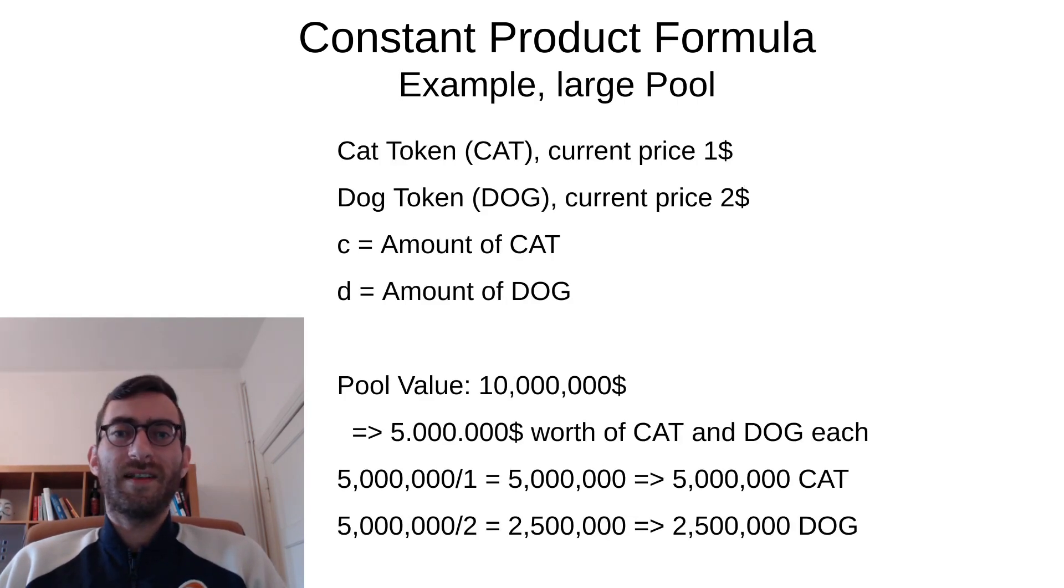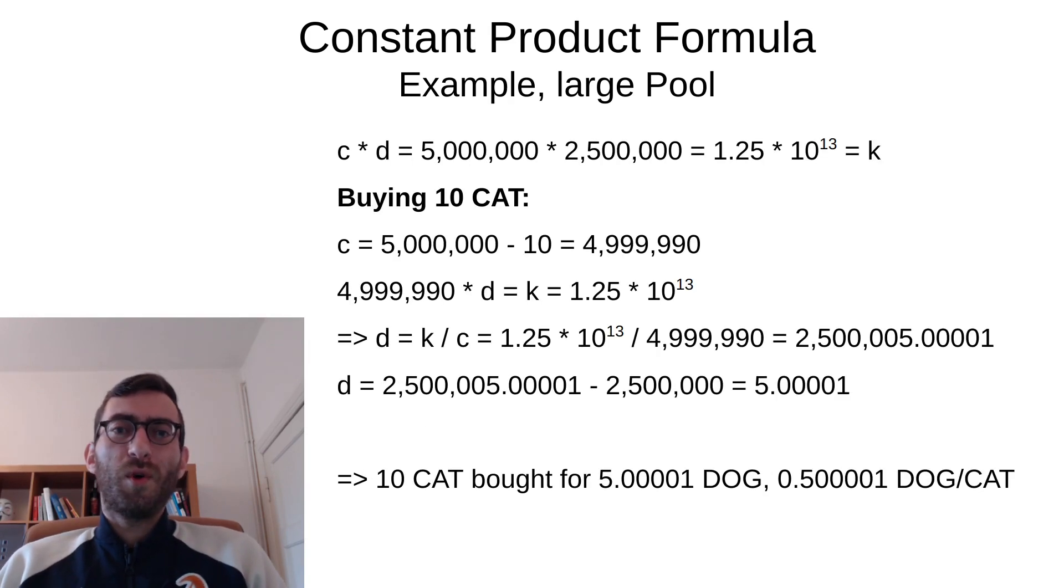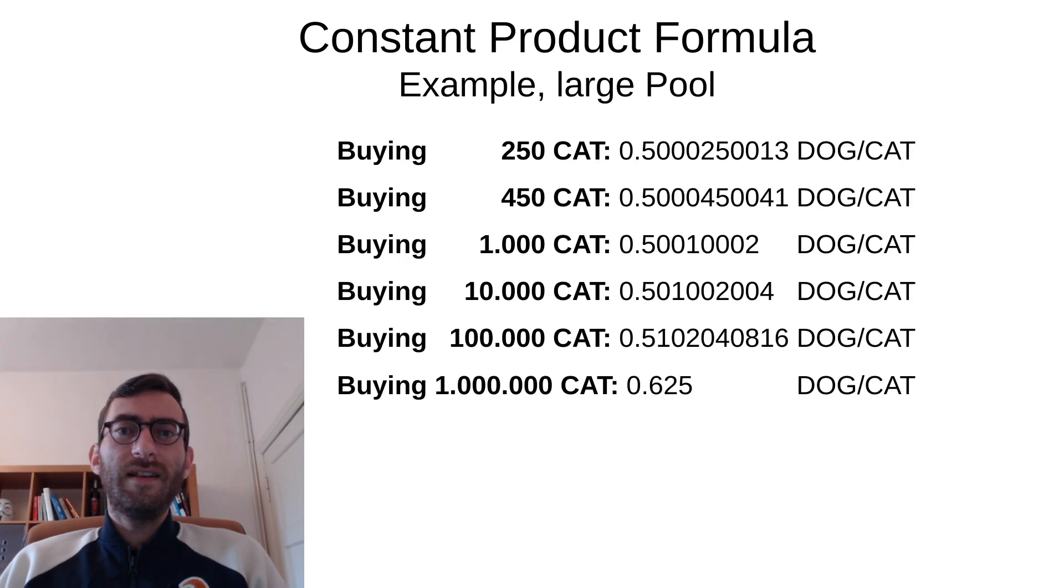Now I chose a small pool size for this example to really make the effect obvious that the further away you go in either direction of the balance of the original balance, the more unfavorable the trade will be. Now let's use a large pool as an example. Let's say we have a 10 million dollar pool. This means same prices as before. This means we have 5 million cat tokens and 2.5 million dog tokens in this pool, much larger than the pool before. Now, if in this pool, I want to buy 10 cat, same mathematics as before. Turns out I only pay 0.500001 dog per cat, which is just about the same as the market price. Why is that? Well, because 10 out of 5 million is so much less than 10 out of 500. This is the thing. The 10 out of 5 million barely change the balance, whereas 10 out of 500 are a noticeable change.